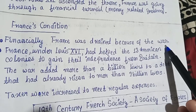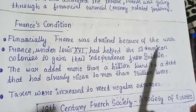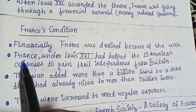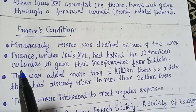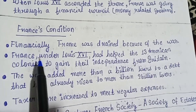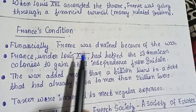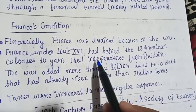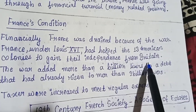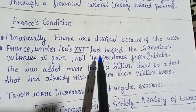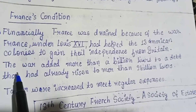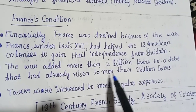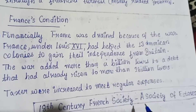France had supported the American colonies in their fight for independence from Britain. When Louis XVI came to power, France gave money to support the 13 American colonies gaining independence. This worsened the financial condition of France. The war added more than a billion livres to a debt that had already risen to more than 2 billion livres.